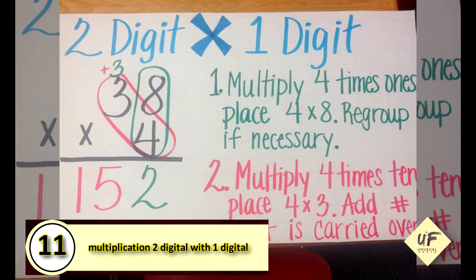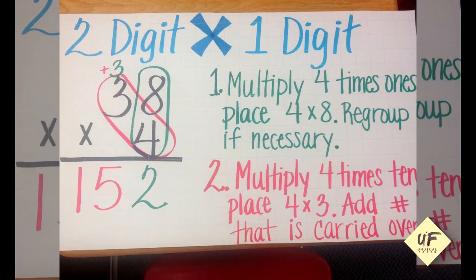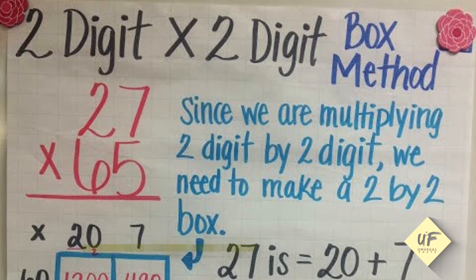Number 11: Multiplication, two digit with one digit. Here's an easy way to remember how to multiply a two-digit number with a one-digit number. Here we have 38 times 4. First, multiply 4 times the ones place, so 4 times 8. Then regroup if necessary. Step number 2: Multiply 4 times the tens place, 4 times 3, add the number that is carried over. So 4 times 8 is 32, and 4 times 3 is 12. Now add it all up.